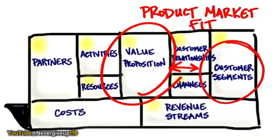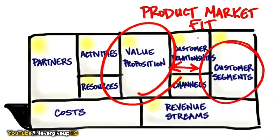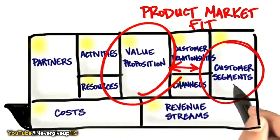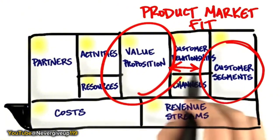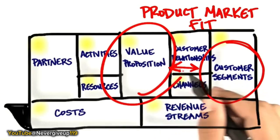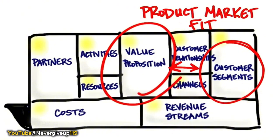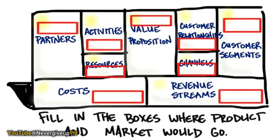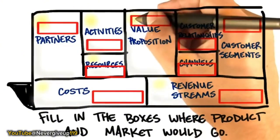When you hear the phrase product market fit, just visualize the canvas and go, that's another fancy word that says: is what I'm building needed, wanted, or passionately desired by a set of customers on the other end? If you don't have that, the customer development process allows you to keep searching without going out of business. You'll be iterating back and forth doing things called pivots and iterations as you discover what customers really want versus what you think you're building for them. Fill in the box where your product would go and then fill in the box where your market would go.